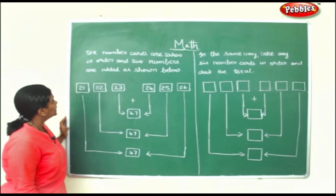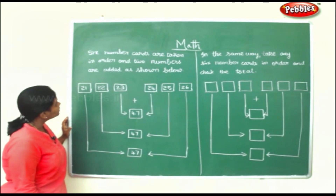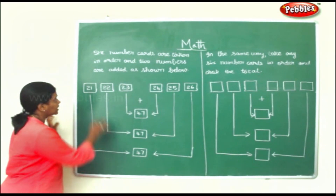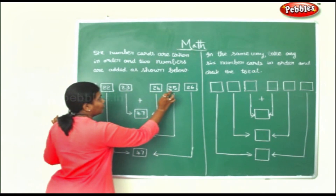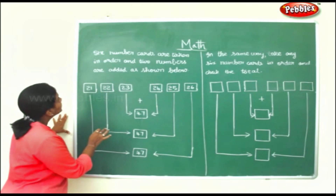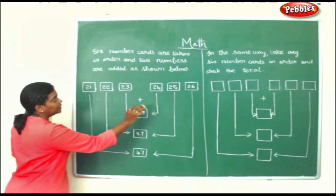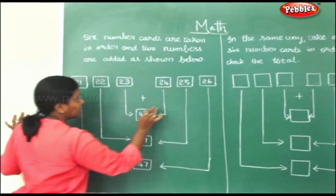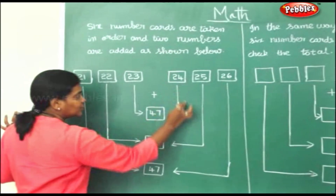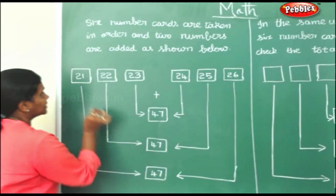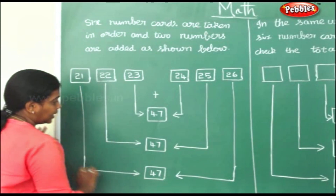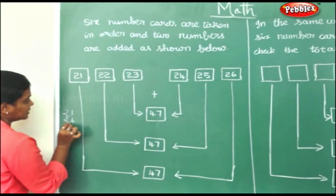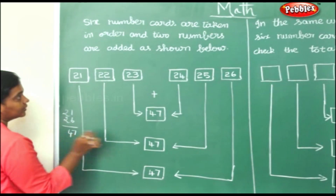Six number cards are taken in order and 2 numbers are added and shown below. They have taken 6 number cards in order: 21, 22, 23, 24, 25, 26. If you sum up the last two or the first two, you will get the same answer. See: 21 plus 26 equals 47. The same way, 22 plus 25 also equals 47.